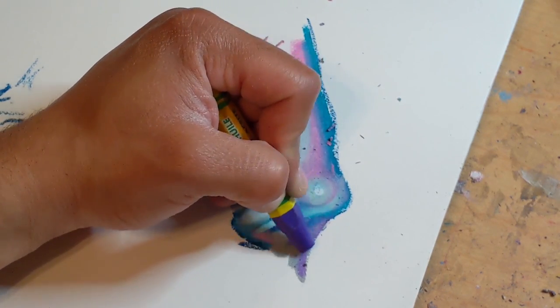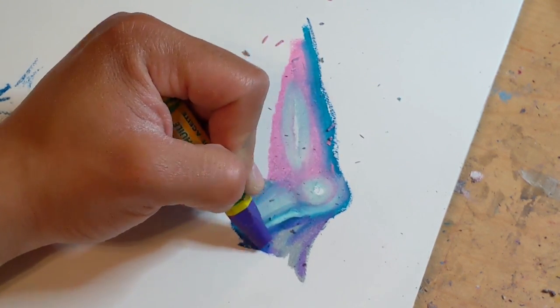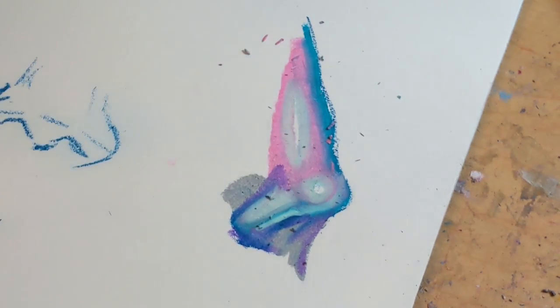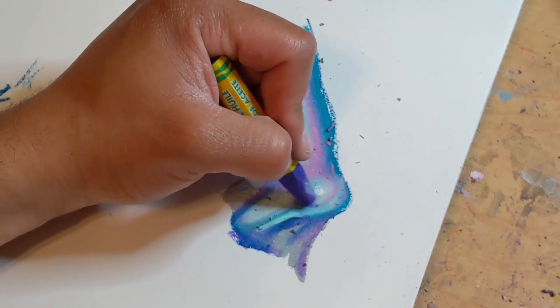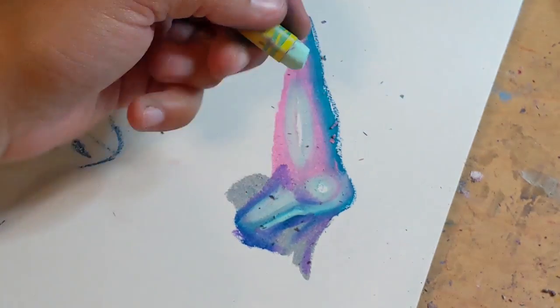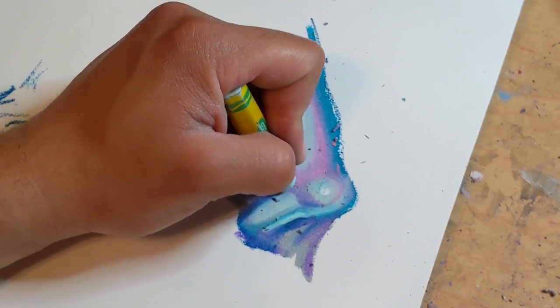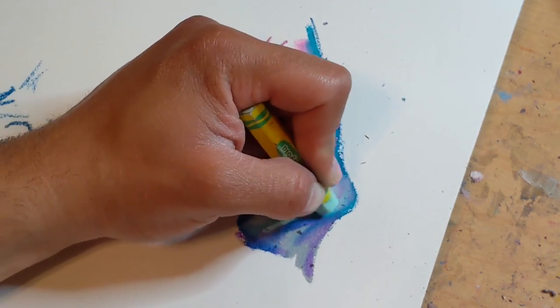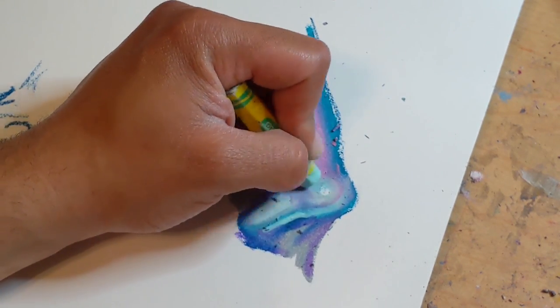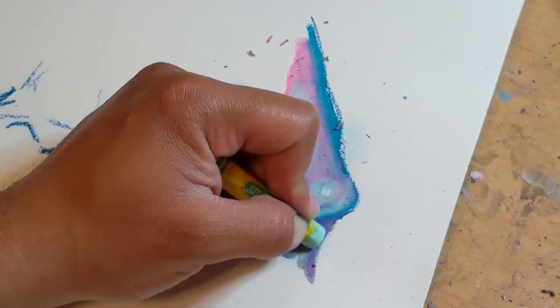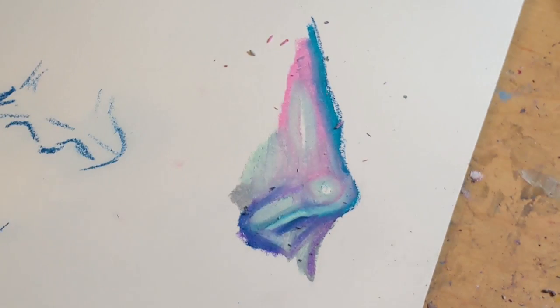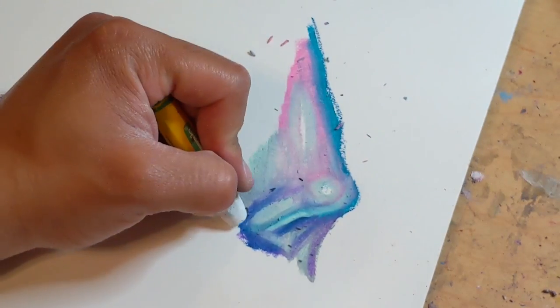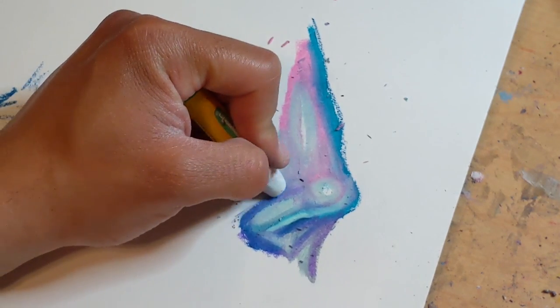I'm going to take purple and darken this area up just a little bit, and same with under here. And I'm going to go ahead and take my teal again and rub that purple out.